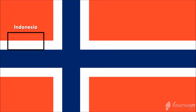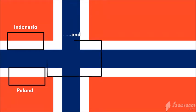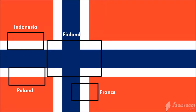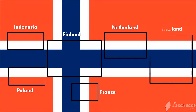First we have the Indonesian flag that has red and white color. Then we have the Polish flag and it is also white and red. In the middle of the Norwegian flag we can locate Finland's flag. At the bottom we can locate the French flag that has three vertical rectangles: blue, white and red. At the right side of the flag we can find the Netherlands flag, and at the far right you see Thailand's flag.